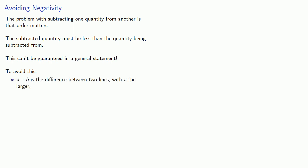The problem with subtracting one quantity from another is that order matters. The subtracted quantity must be less than the quantity being subtracted from. Unfortunately, this can't be guaranteed in a general statement. So we can at least modify our statement a little bit so we can guarantee it. So to avoid this, we might say that A minus B is the difference between two lines with A the larger.